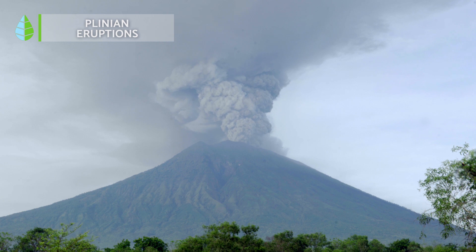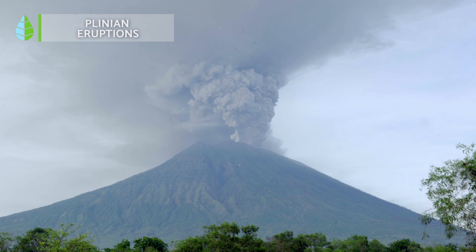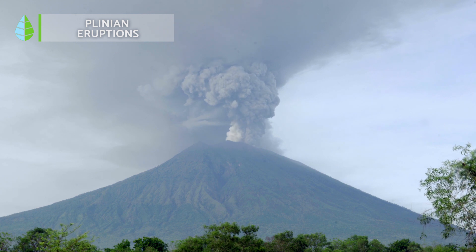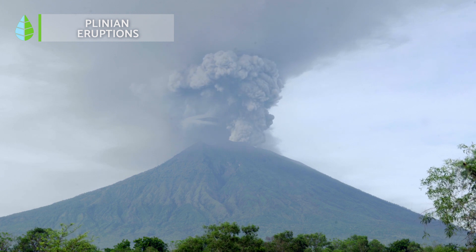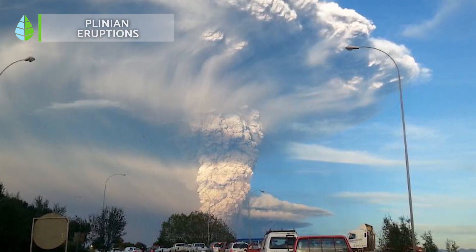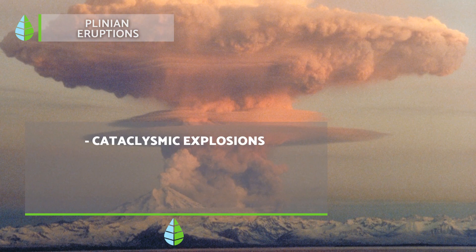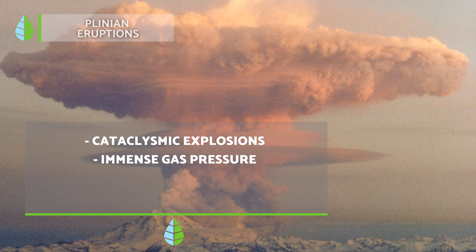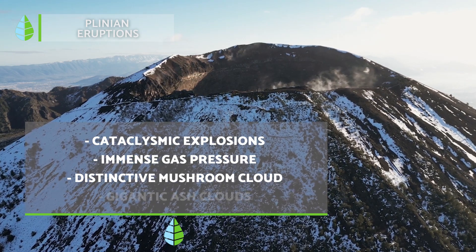Plinian eruptions are incredibly violent and derive their name from Pliny the Elder, who lost his life during one such event. Similar to Volcanian eruptions, Plinian eruptions involve intense explosions. However, they are often more powerful due to the heightened pressure of the gases involved. They often produce distinctive mushroom- or fungus-shaped ash clouds. As the ejected materials cool, they form dense ash clouds capable of completely blanketing entire cities.